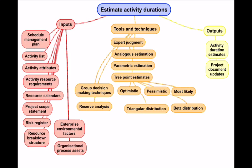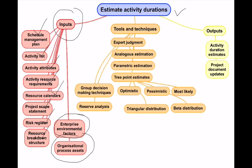After activity resource estimation, the next process is activity duration estimation, where we estimate the duration of the activities. The inputs include the schedule management plan, activity list, activity attributes, activity resource requirements, resource calendars, project scope statement, risk register, resource breakdown structure, enterprise environmental factors, and organizational process assets — all discussed in previous mind maps. Now let's focus on the tools and techniques side.